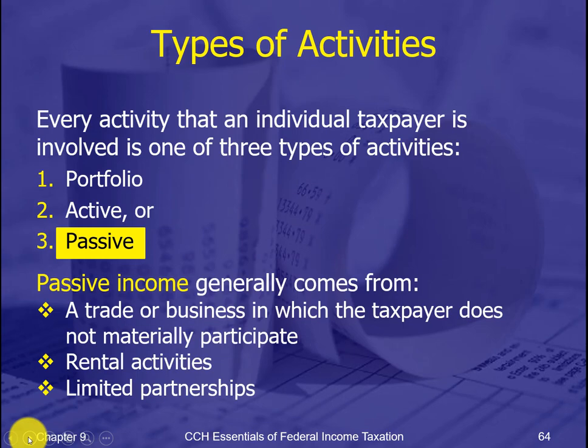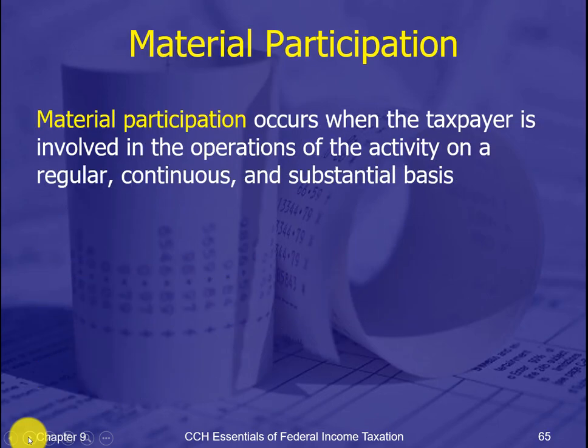What we're mostly worried about is passive income, because the rule says you can't take losses on passive activities against any of the others. If you have a loss on passive activities, that loss will not be deductible against active income or against portfolio income. Where does passive income come from? If you do not materially participate, rental activities by definition are passive — except in very narrow cases — and if you're involved with a limited partnership. As a limited partner, the general partner is not passive, but limited partners are.